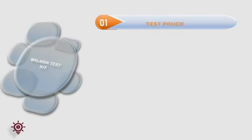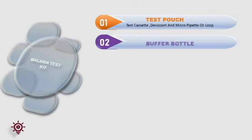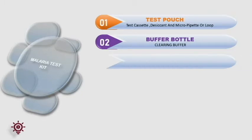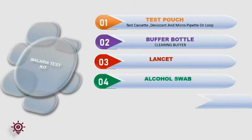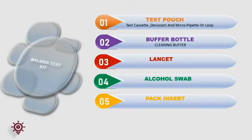The malaria test kit consists of a test pouch — a sealed pouch containing the test cassette with desiccant and a micro pipette loop — and a buffer bottle with clearing buffer. The third component is a lancet to prick the finger, along with an alcohol swab for single use. And lastly, the pack insert, which is the instruction for use.